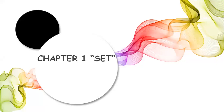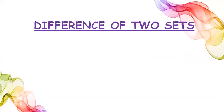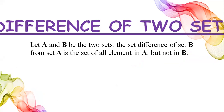Today we are going to discuss our chapter on sets, in which we are going to discuss operations on sets. In an earlier lecture we discussed intersection and union. Today's topic is the difference of two sets. Let A and B be two sets. The set difference of set B from set A is the set of all elements in A but not in B.